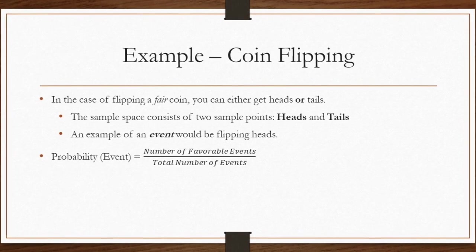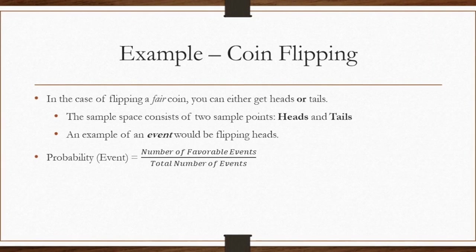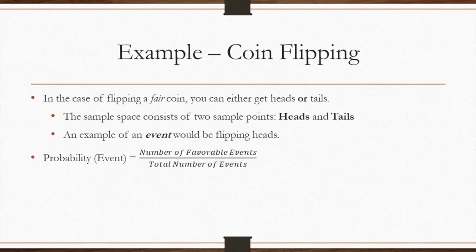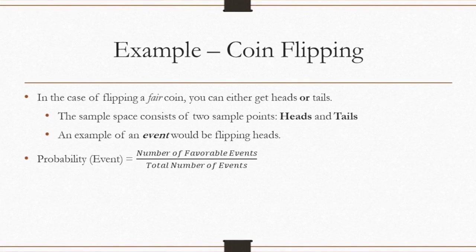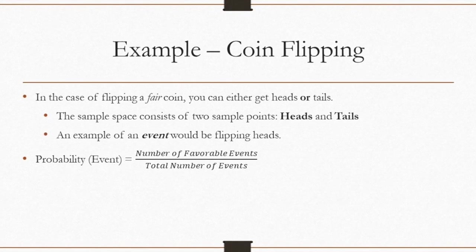Each flip represents an event which would be one of the two possible sample points. We can find the probability of flipping a heads or a tails by examining the ratio between the favorable events and the total number of events.